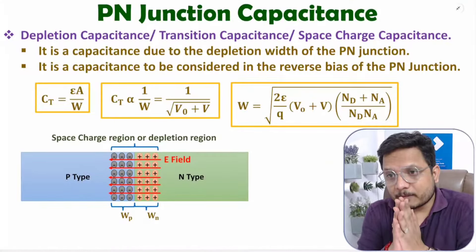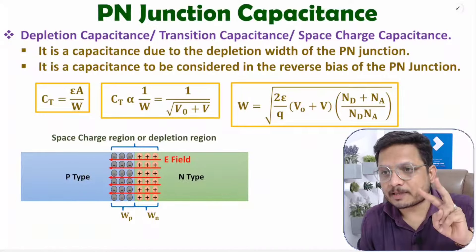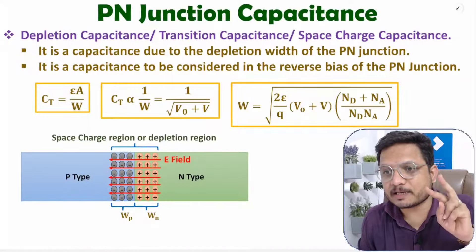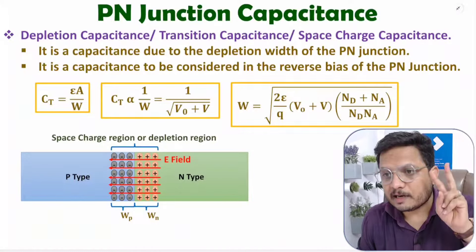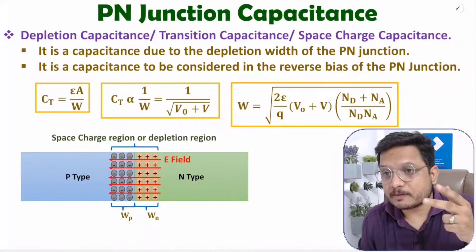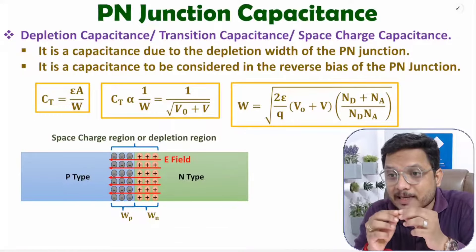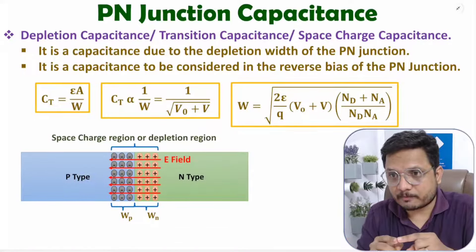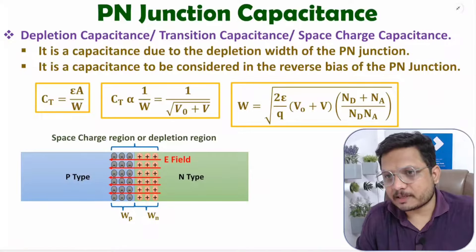Hello friends, welcome to Engineering Panta family. In this video I am going to explain two types of capacitance which are present in a p-n junction: one is depletion capacitance and second is diffusion capacitance. I'll explain how those capacitances will vary with respect to the biasing which we give to the p-n junction.